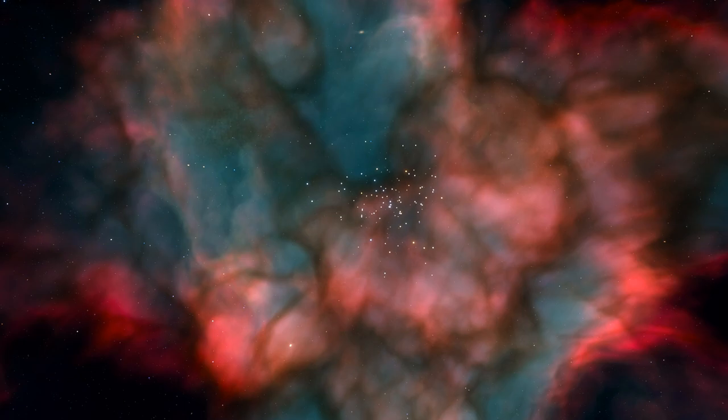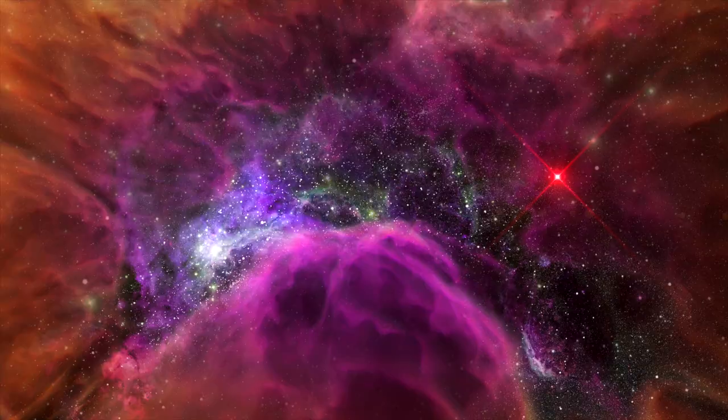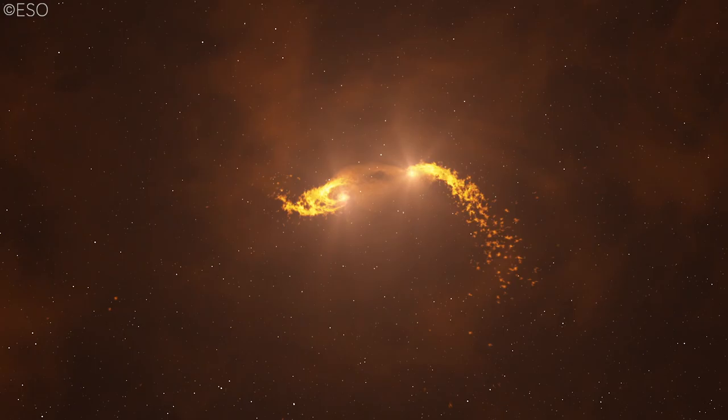The nebulae are made up of dust and gases, primarily hydrogen and helium. Although the dust and gases in a nebulae are widely dispersed, gravity can start to gradually gather some of the dust and gas clumps.